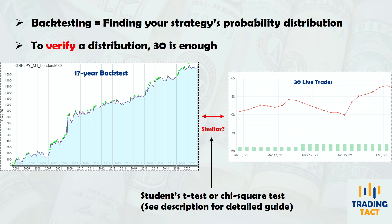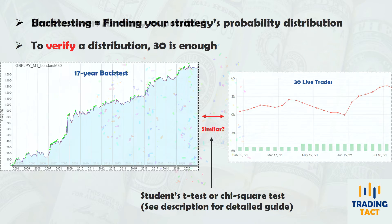So if it's not 30, then what is it? The short answer is: as many as possible. Obviously, this answer is not very useful.